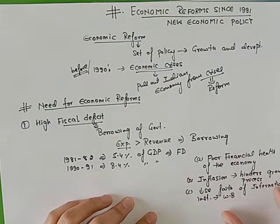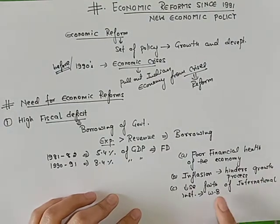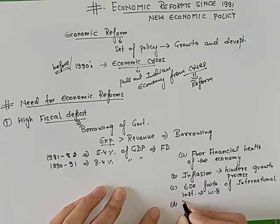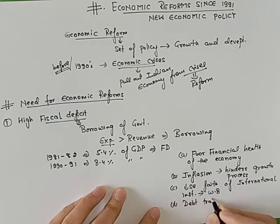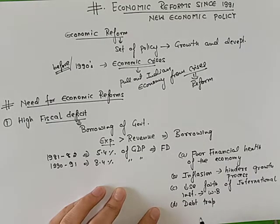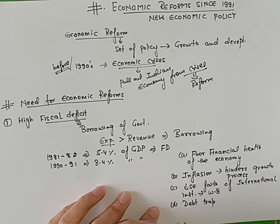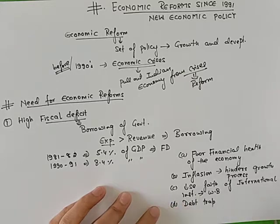The next consequence is that it led to a debt trap for the government. Debt trap ka matlab hai ki aap bahut zyada karz mein doob gaye hain. For example, if you borrowed 100 rupees and have to pay 2% interest — that means 2 rupees — but your financial health has become so bad that to pay even those 2 rupees, you are borrowing from outside again. That means it led to a debt trap.